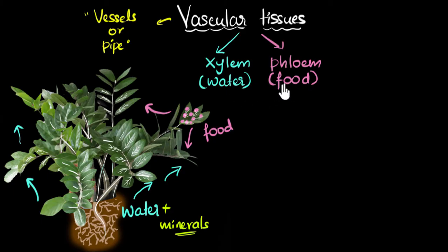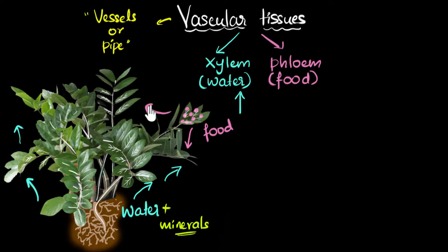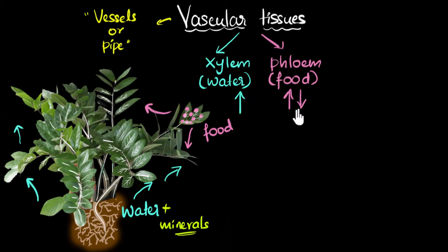A handy way to remember this: 'pho' for food, 'pho' for phloem. Another reason they must be separate is directionality. Water transport in xylem is one direction only — upward from roots to leaves. But food transport in phloem must go in both directions: sometimes up to growing areas, sometimes down to the roots where storage organs are. So xylem is unidirectional and phloem is bidirectional — it makes perfect sense to have two separate vascular tissues.